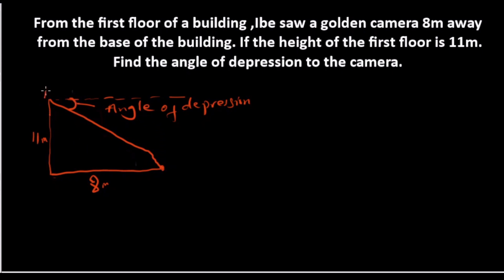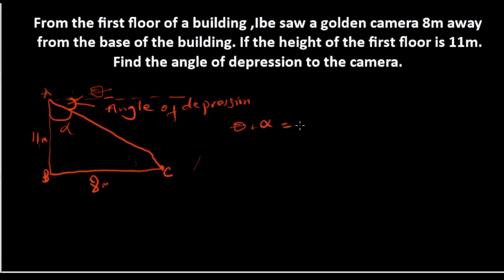Let's label this triangle. We'll call this triangle A, B, and C. So if this is triangle ABC, obviously there's an angle in here. Let's call this angle alpha, and let's refer to my angle of depression — let's call it theta. So obviously my angle of depression theta plus my alpha will be equal to 90 degrees. If theta and alpha sum to 90 degrees, we can discover alpha, then we'll be able to solve for theta.